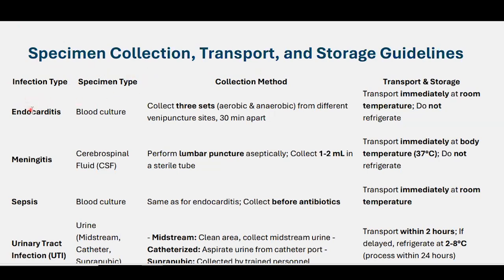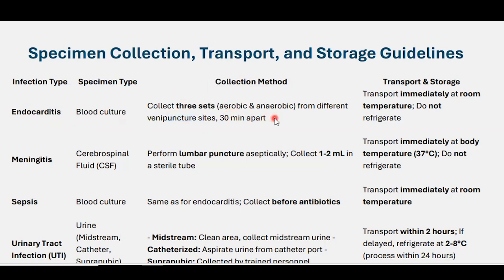The first infectious disease is endocarditis, which requires blood culture. We collect three sets — aerobic and anaerobic — from different venipuncture sites. Collect the first set, then after 30 minutes collect the second, and after another 30 minutes collect the third. Transport immediately at room temperature; do not refrigerate.